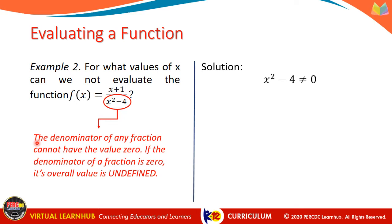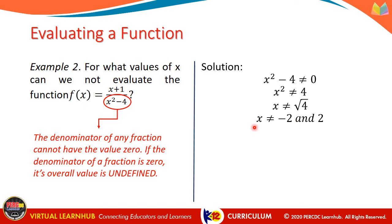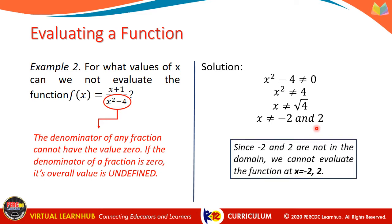So to get the answer, we should make sure that the denominator x squared minus 4 will not be equal to 0. Transposing negative 4 to the other side gives us x squared should not be equal to 4. Getting the square root of both sides, therefore x should not be equal to negative 2 and positive 2. Since negative 2 and 2 are not in the domain, we cannot evaluate the function at x equals negative 2 and 2.